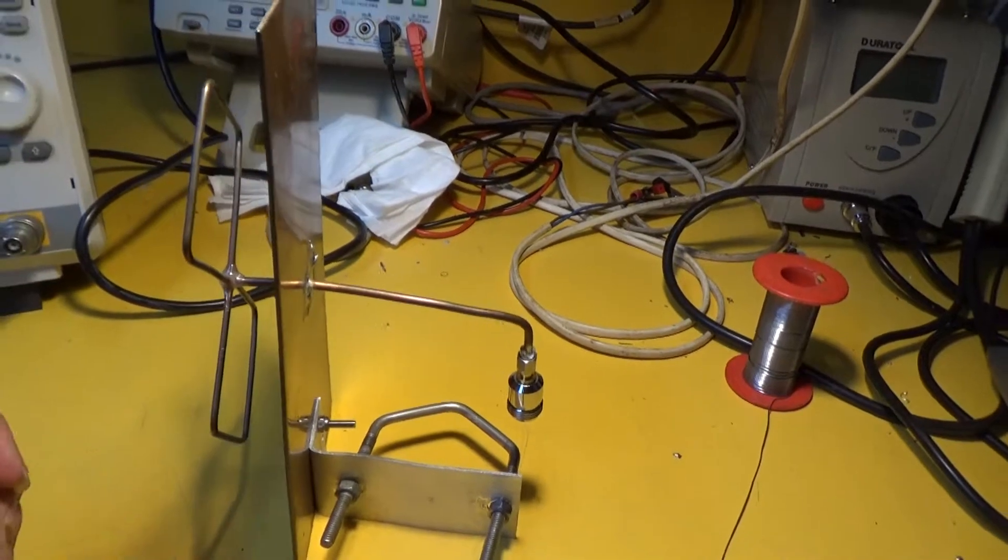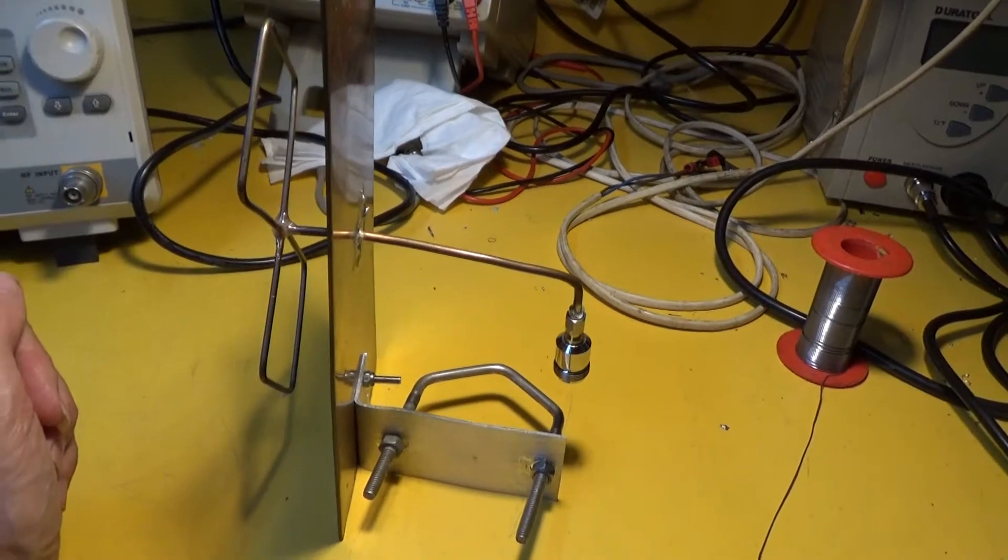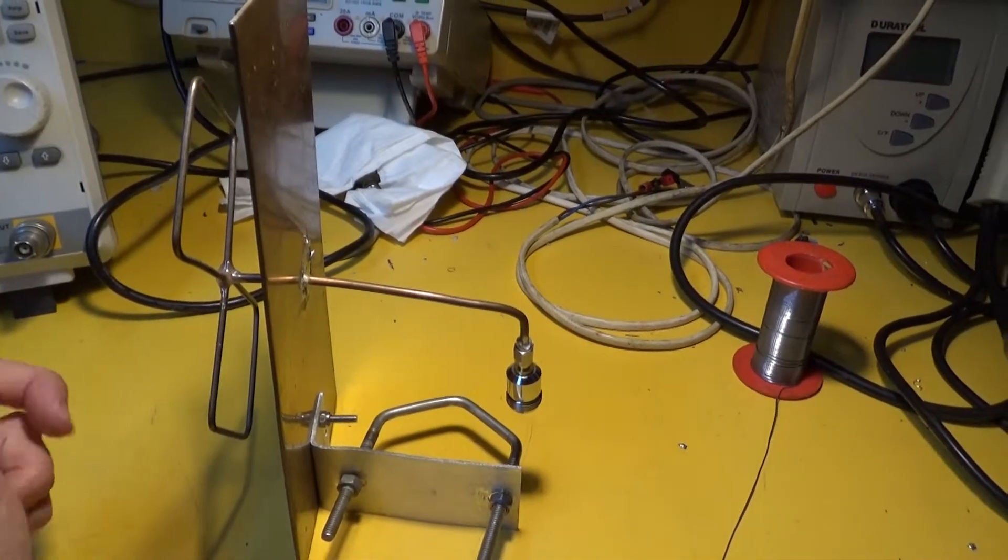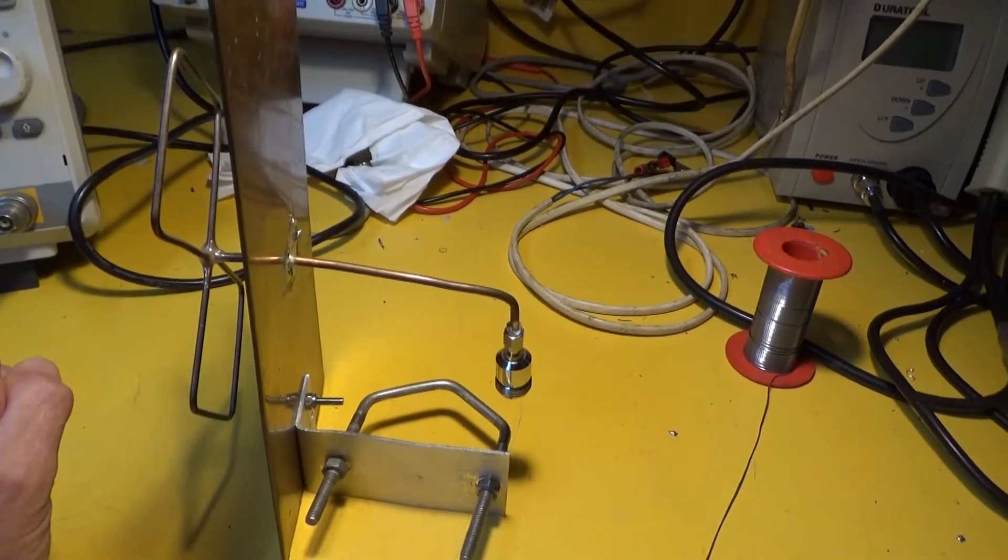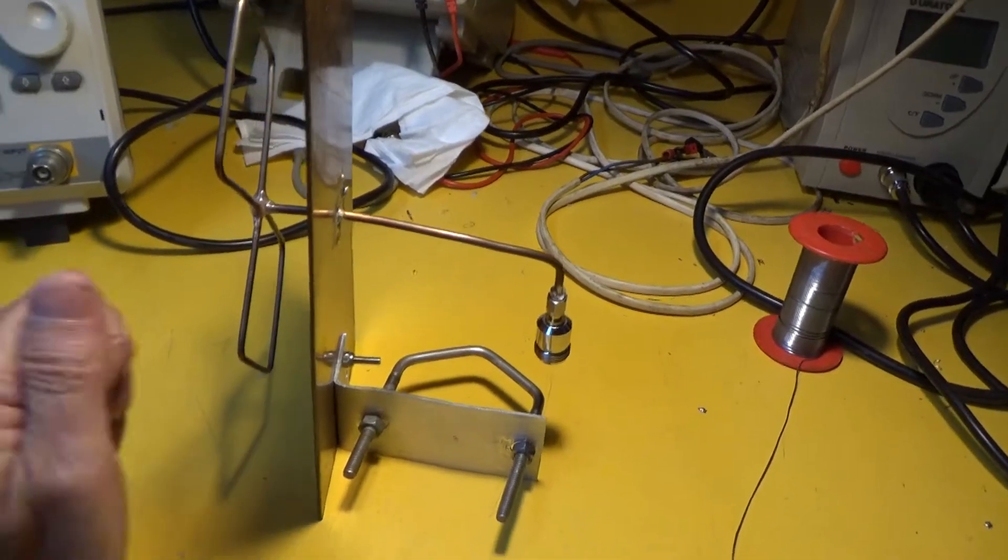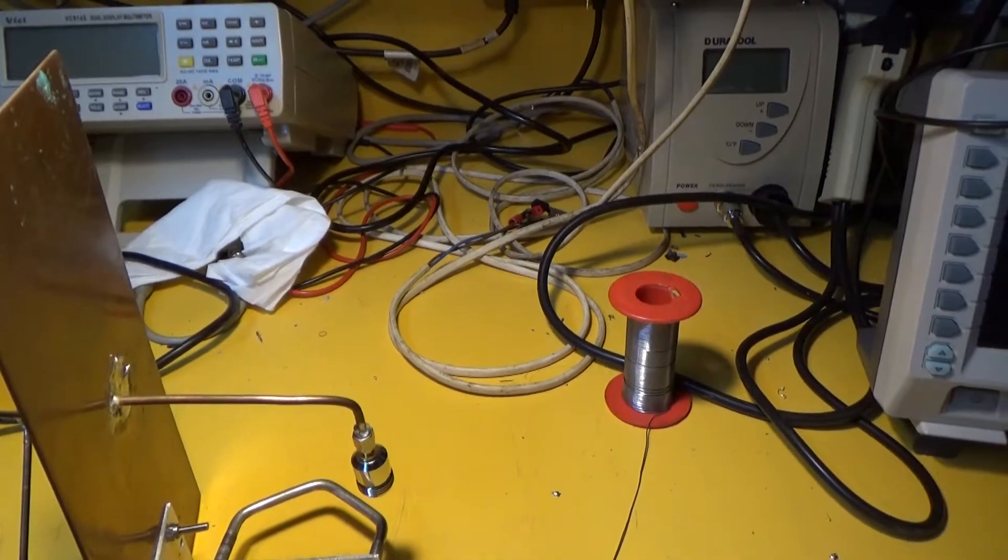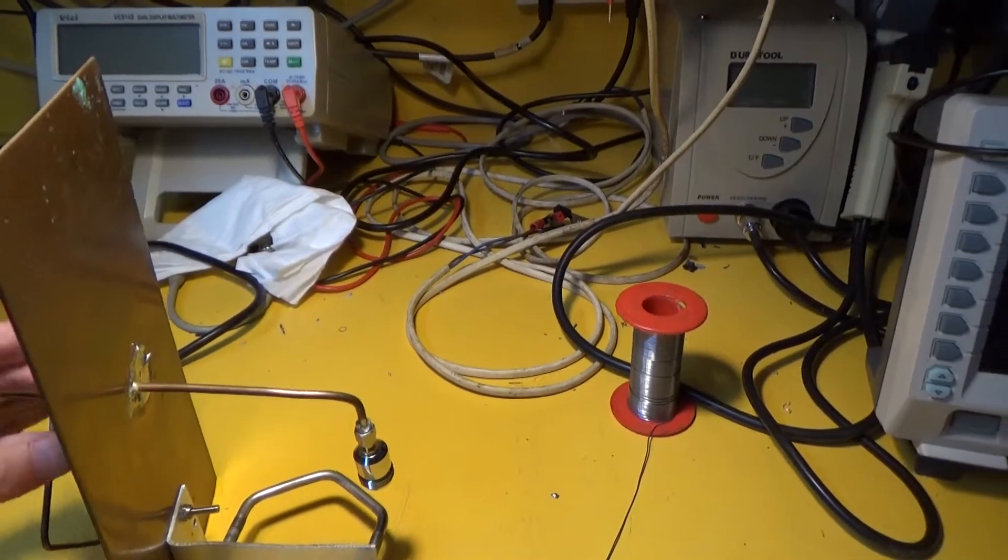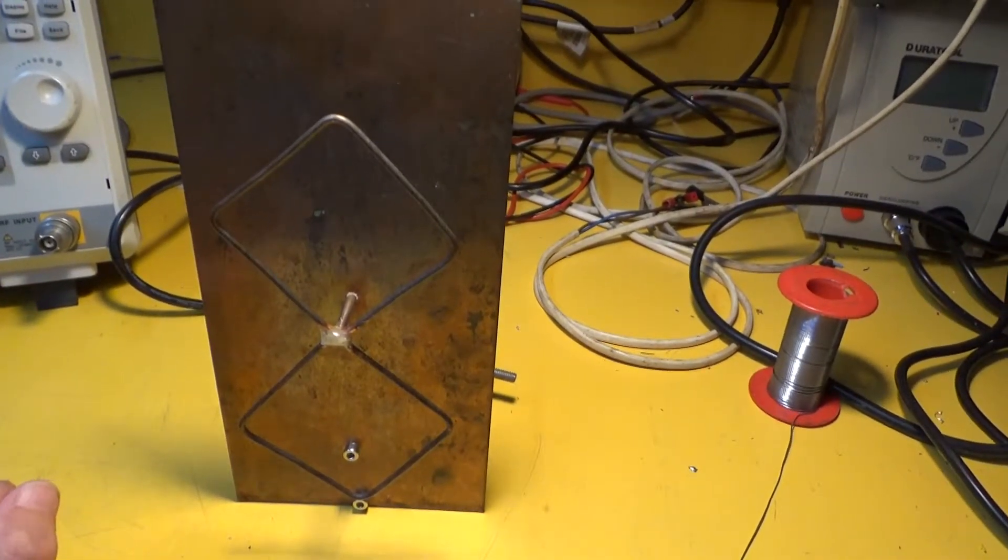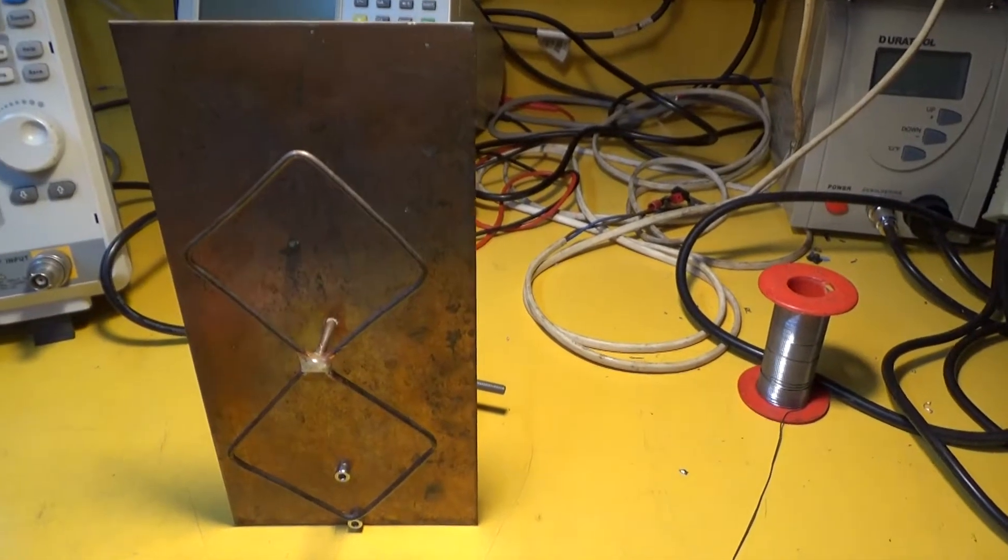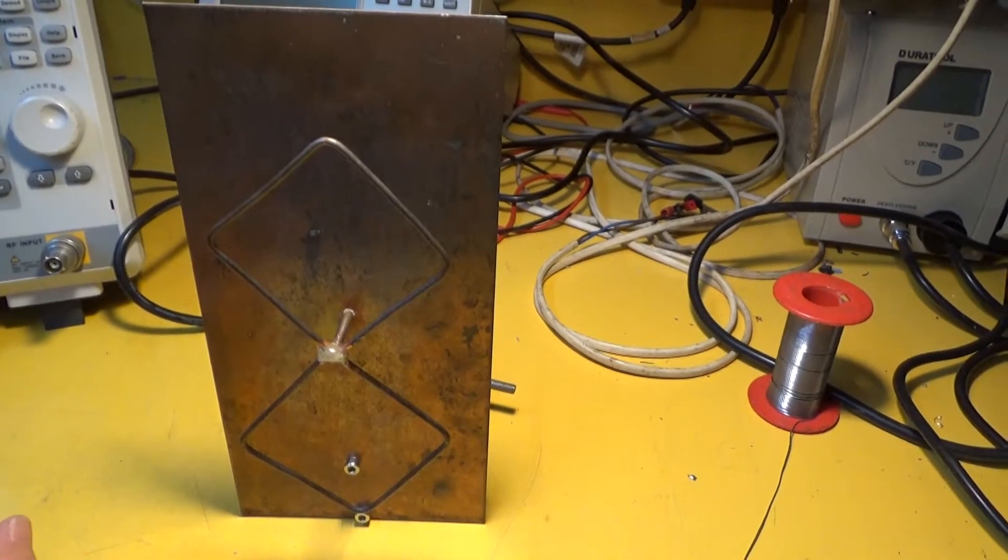I got the semi-rigid coax when I was modifying my Marconi RF generator. It had the RF output on the back which is no good at all, so I removed the semi-rigid coax and refitted the socket to the front. This little antenna in theory should have a gain of about seven to eight dB.